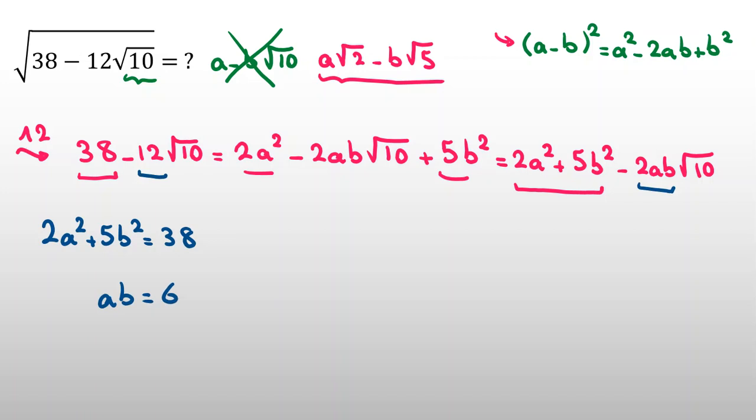So, we can say ab equal to 6 because 2ab equal to 12. Now, I consider a and b positive, so let's check different cases to see.